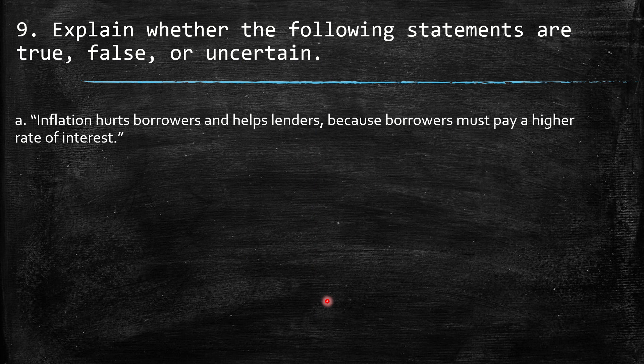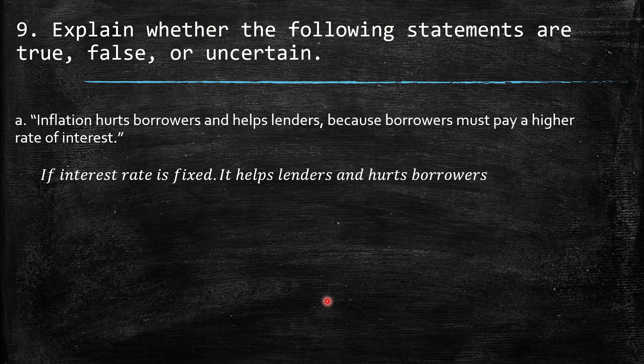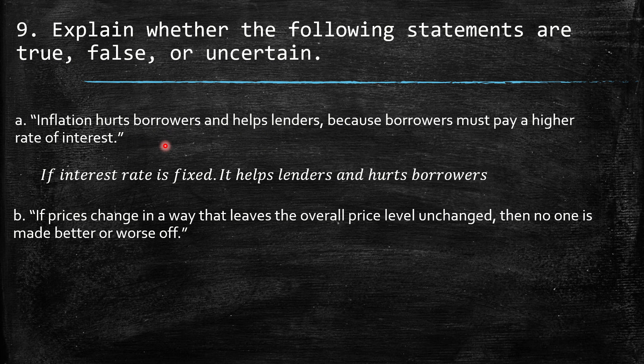Question 9: Explain whether the following statements are true, false, or uncertain. Statement A: 'Inflation hurts borrowers and helps lenders because borrowers must pay a higher interest rate.' This is false. If the interest rate is fixed, inflation actually helps borrowers and hurts lenders. For example, if the nominal rate is 10% but inflation rises to 12%, the borrower's real interest rate is minus 2% — they pay less in real terms and may receive a higher salary due to inflation. So borrowers are better off.